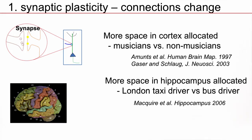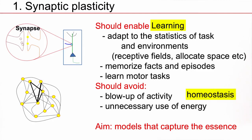The brain can adapt to the environment, and synaptic plasticity is at the core of this. Synaptic plasticity should enable us to do different things — to adapt to the status of the task, to form receptive fields, allocate space. We talked about memorizing names, memorizing episodes — that's synaptic plasticity. We talked about riding a bike — again, it's synaptic plasticity. All this is part of what we call learning.